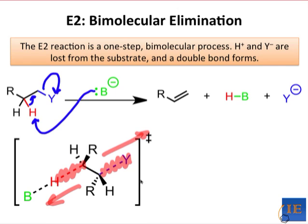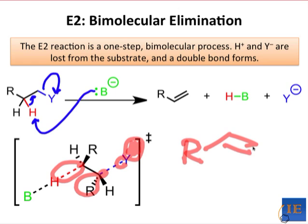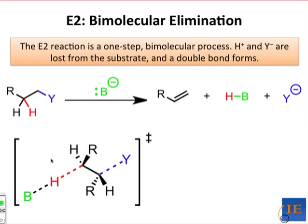This arrangement is required for E2 elimination because the key electron flow involves overlap of the C-H sigma bonding orbital with the C-Y sigma-star antibonding orbital. Placing these bonds in an anti-periplanar arrangement optimizes this overlap. Be careful, as not all substrates can achieve this crucial arrangement of atoms. From this particular transition state, we would expect the trans double bond product because the two R groups are pointing in opposite directions — one on a wedge coming towards us, and one on a dash going away from us.